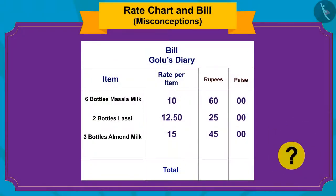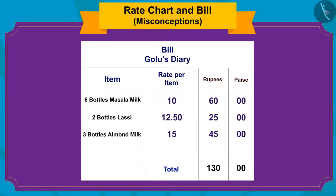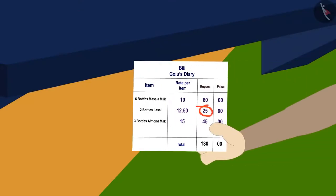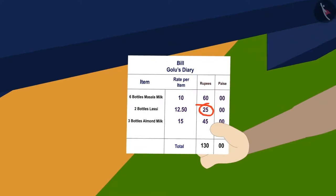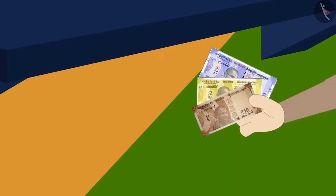Children, now can you find the true value of the total items? Well done children! You have found the answer correctly! Sher Khan and Bholla owe a total of 130 rupees to Golu. Bholla also found out the mistake in Golu's receipt, just like you did, and gave him 130 rupees.